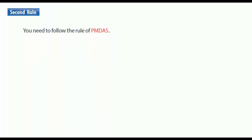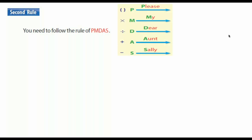Now let's talk about the second rule of order of operations. You need to follow the rule of PEMDAS. PEMDAS shows you the correct way to solve a question: P means parentheses, M means multiplication, D means division, A means addition, and S means subtraction.